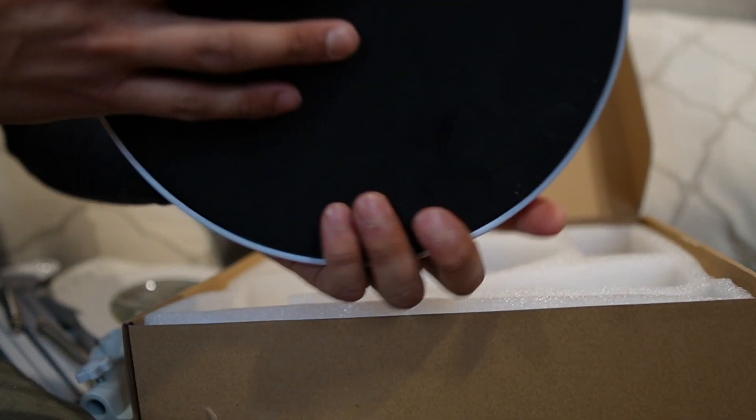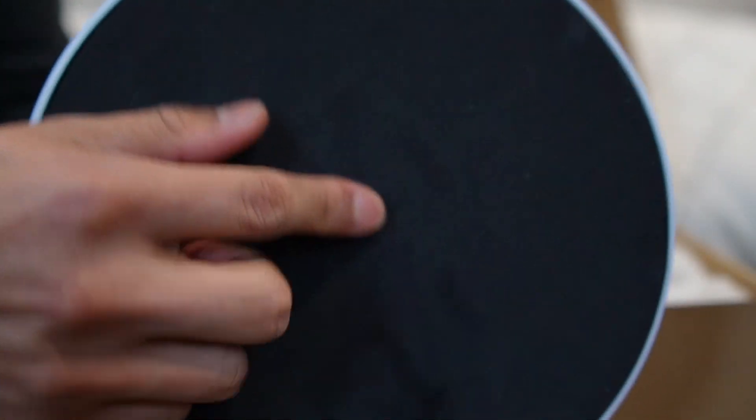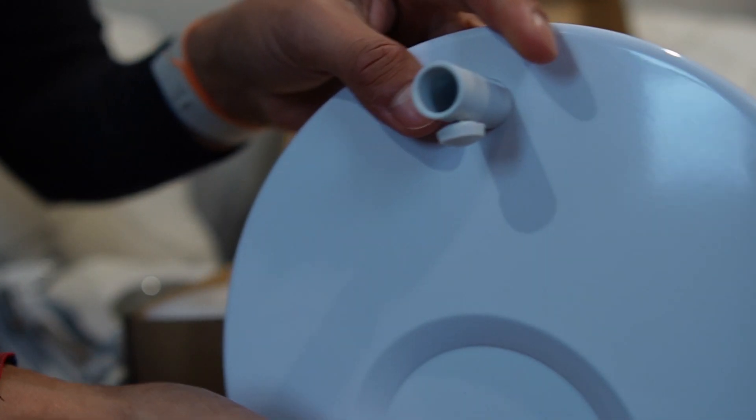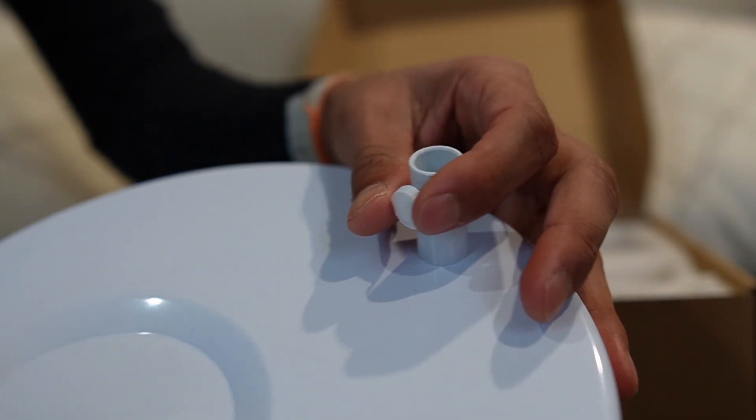This thing is pretty hefty, and we've got foam at the bottom to prevent it from scratching the table. Here's what the top piece looks like, and this is where the magnifying glass is going to attach to.